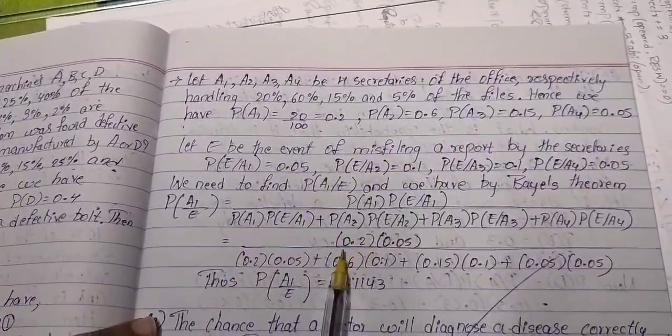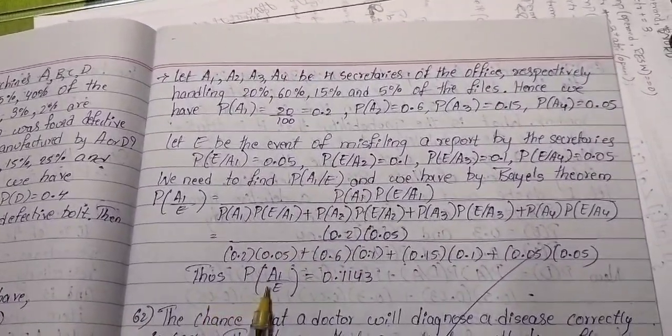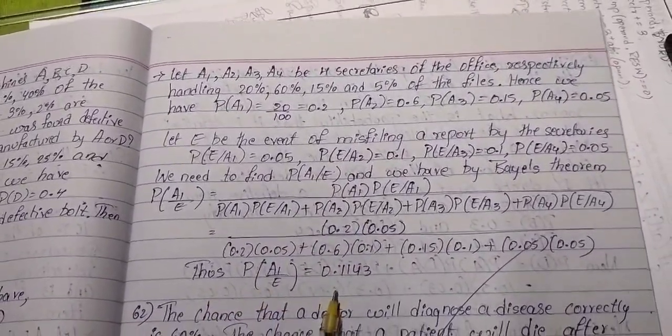By using this, we substitute the values and we get P(A1|E) = 0.1143.